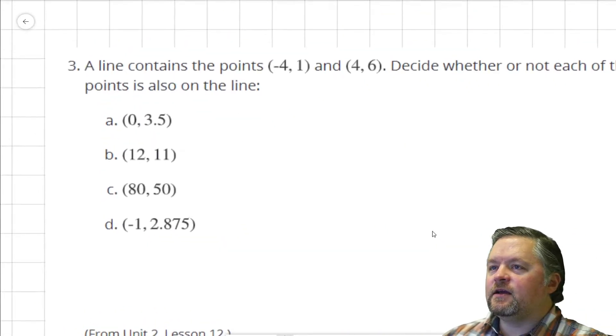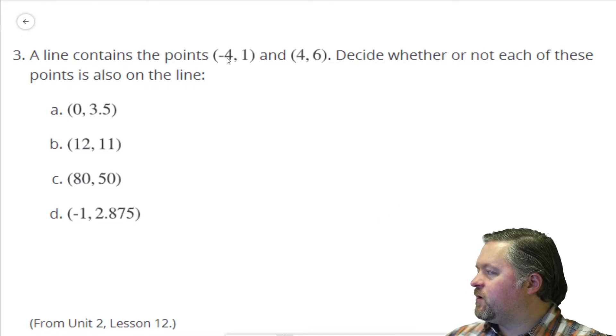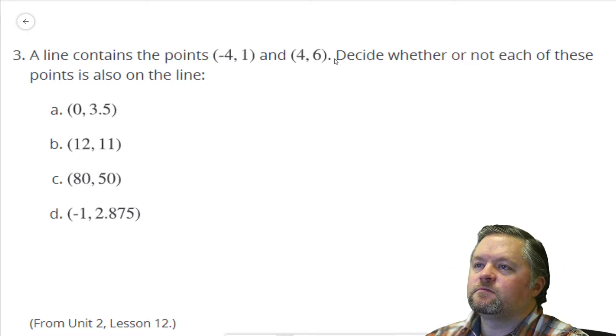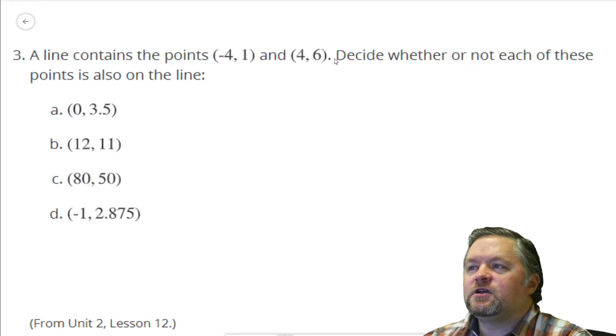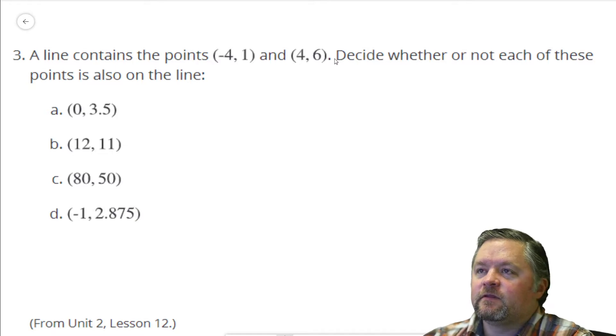Okay, next question. A line contains the points (-4, 1) and (4, 6). Decide whether or not each of these points is also on the line. Easiest way to do that? Find the equation of the line. First thing we've got to do is find the slope.